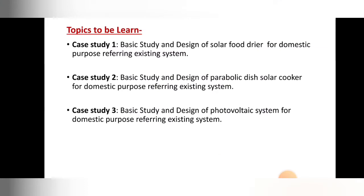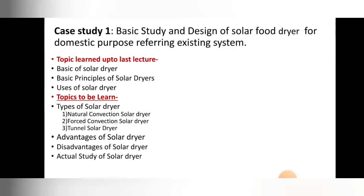In unit number four we are going to study three case studies: the solar food dryer, the second case study on the parabolic dish cooker and solar cooker, and the third case study on solar dryers in the photovoltaic system. Up to the last lecture we covered the basics of solar dryers, the basic principle of solar dryers, and uses of solar dryers.